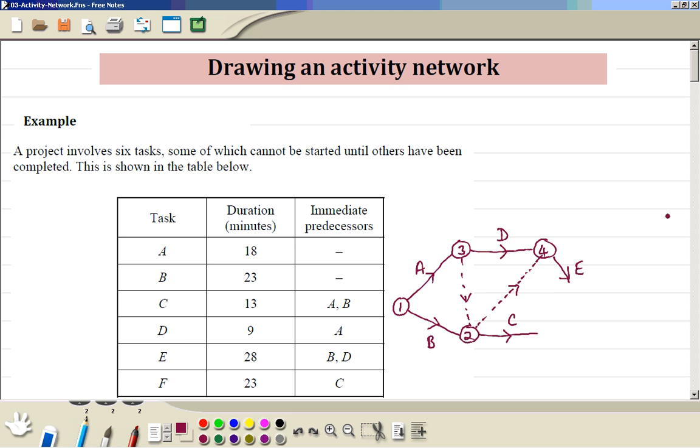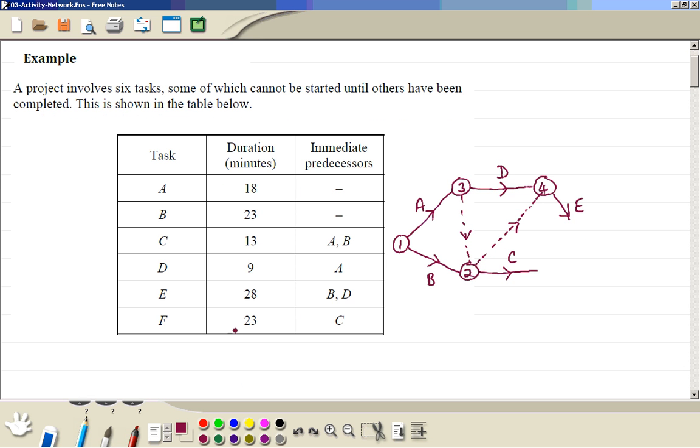Then F can start off to C, so this is F. E and F are not in the precedence column or they are not predecessors, so they have to come together at the end. That's the event number 6 and that's the end.